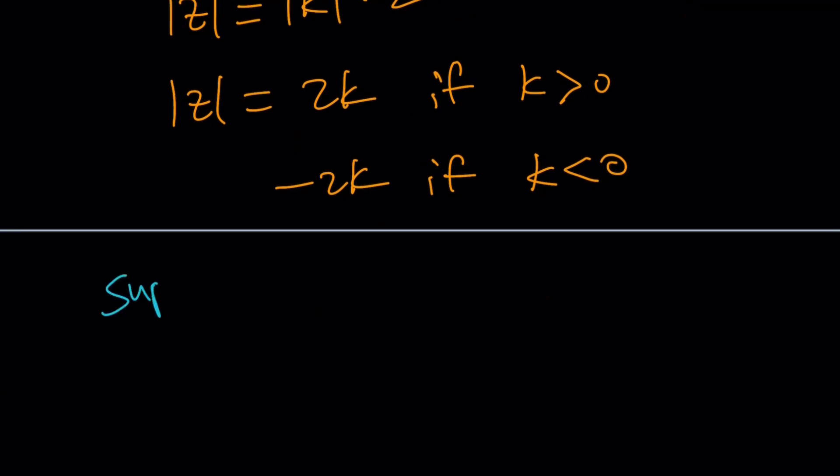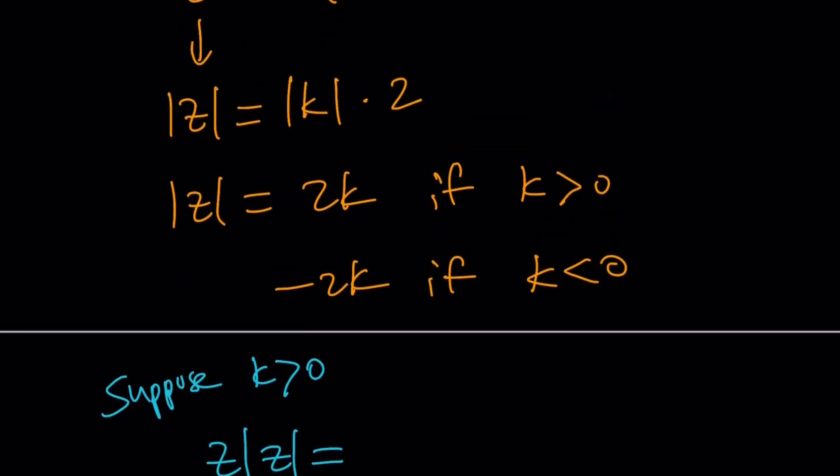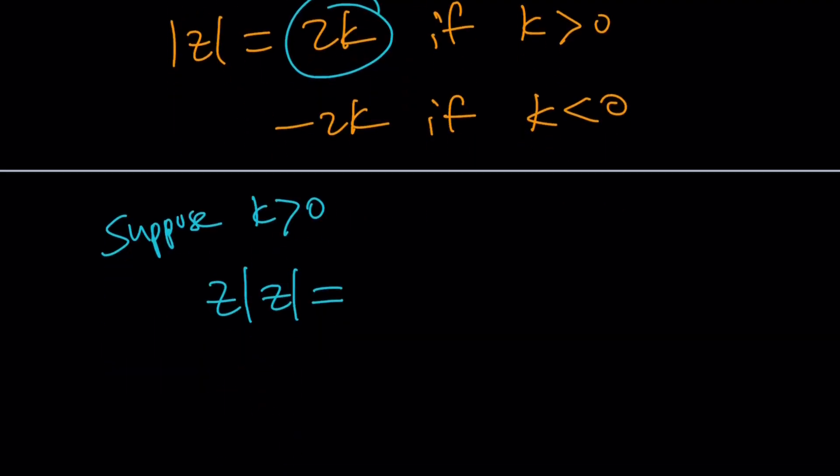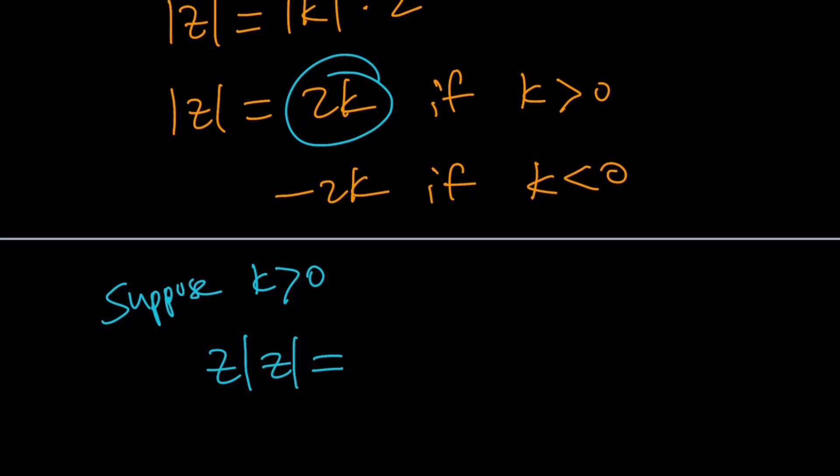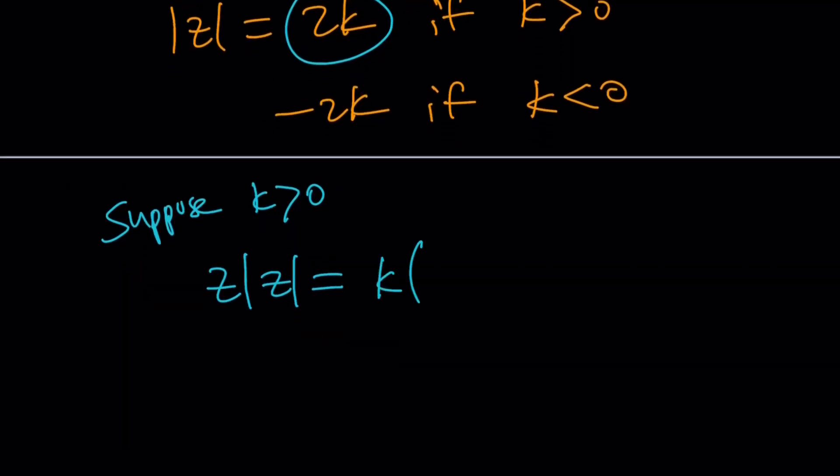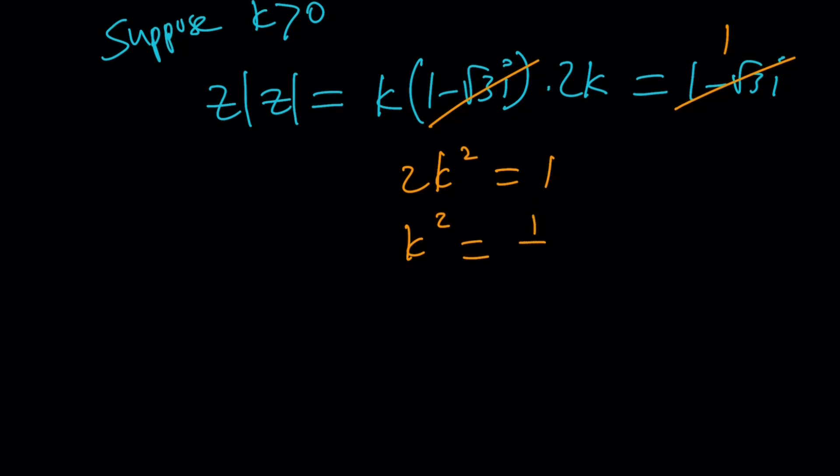Suppose, you know how math proofs start, suppose k is positive. In this case, we have z times the absolute value of z equals. So, if k is positive, we're going to use this one for absolute value of z. And for z, we're going to use this one. Make sense? I didn't complicate things. Anyways, so we're going to replace z with k times 1 minus root 3i. Remember, that was the formula. And absolute value of z is going to be just 2k. And this is supposed to equal 1 minus root 3i. You see, this is what I meant by canceling out. So, now they're going to cancel out like this, these two, because they're not zero. And we're going to have 2k squared equals 1, k squared is equal to 1 half. So, we kind of got to the same point in a different way.